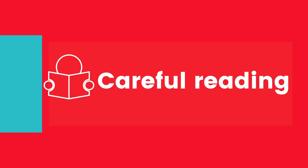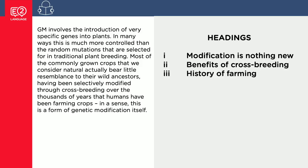Let's look at one paragraph and three headings and work on our careful reading. When we do headings match, we always start with the paragraph rather than the heading. So let's read it together. GM involves the introduction of very specific genes into plants. In many ways, this is much more controlled than the random mutations that are selected for in traditional plant breeding. Most of the commonly grown crops that we consider natural actually bear little resemblance to their wild ancestors, having been selectively modified through crossbreeding over the thousands of years that humans have been farming crops. In this sense, this is a form of genetic modification itself. So then we've got our three headings: modification is nothing new, benefits of crossbreeding, and history of farming.